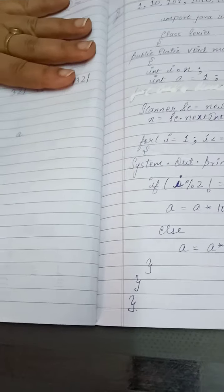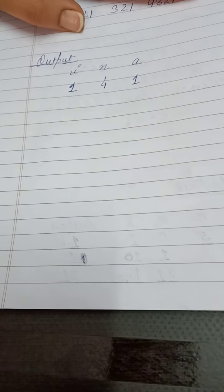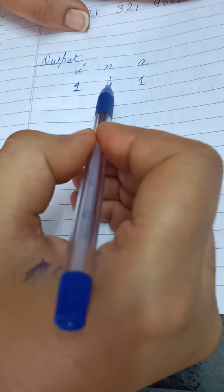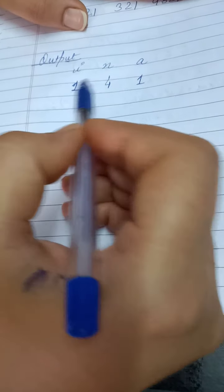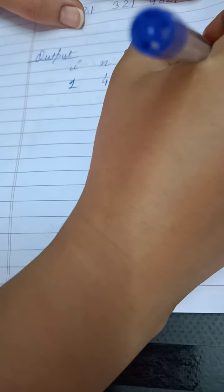Now just see the output of this a. Now the value of i is 1 and let's say I have taken n as 5. And a I have initialized here 1. Now the condition is true. i is less than is equal to n. So it will display here 1.